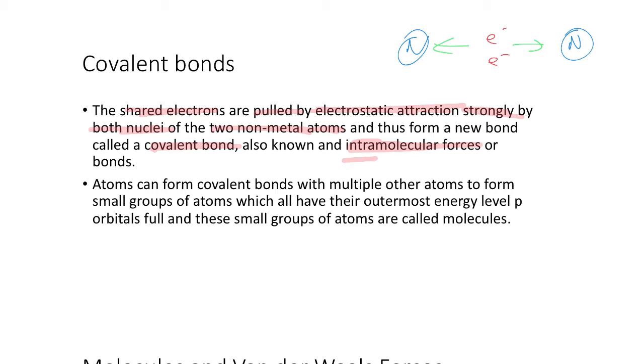Atoms can form covalent bonds with multiple other atoms to form small groups of atoms and all have their outermost energy level p orbitals full. These small groups of atoms are called molecules. So the idea is that you might have up to 10, 15, 20 atoms or more all join together with these covalent bonds, and then they make those small groups called molecules.